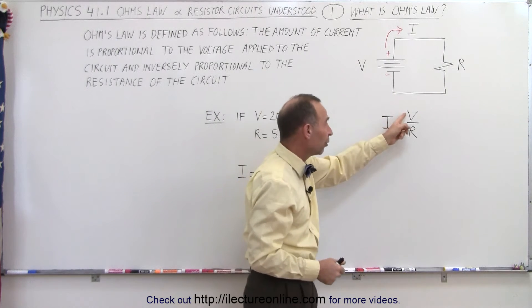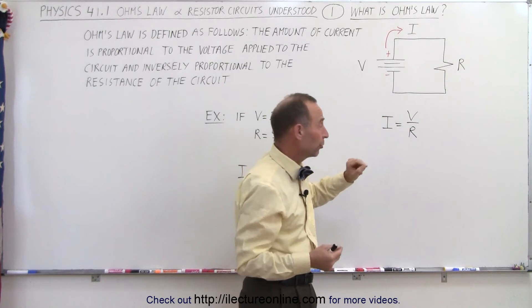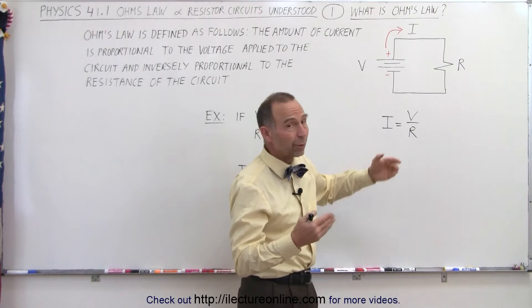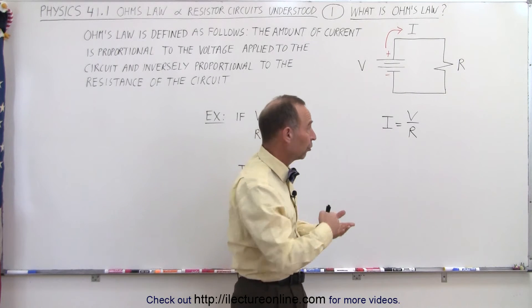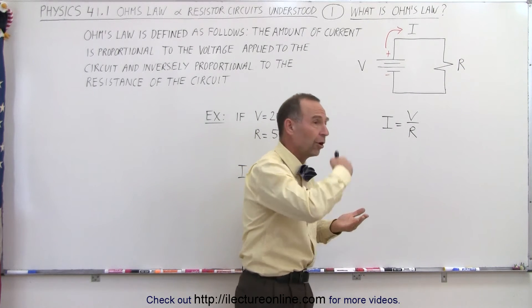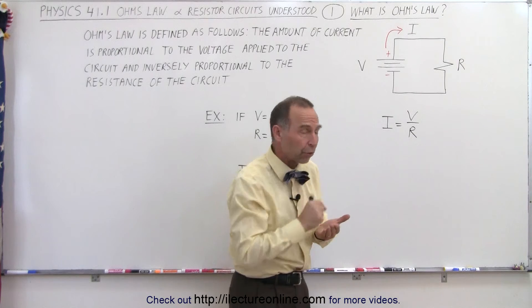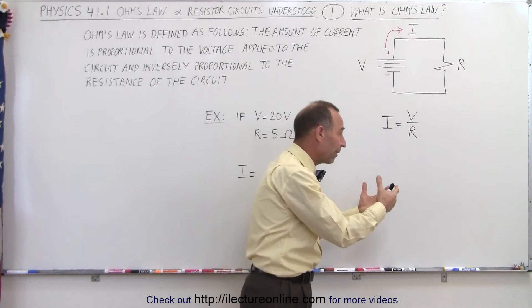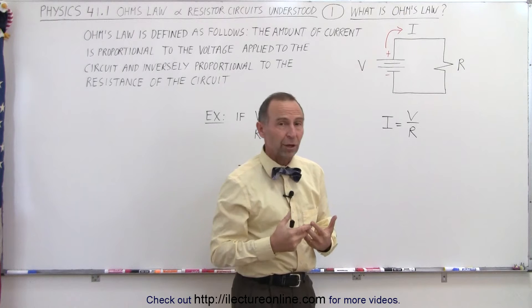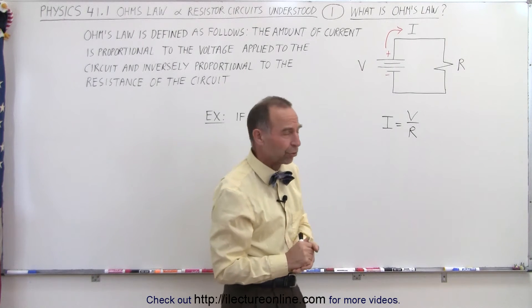Which means that if we double the voltage, we get twice as much current. If we double the resistance, we only get half as much current. So the more voltage we apply to the circuit, the greater the current and it's proportional to that. The more resistance we have in the circuit, the less current that will flow and it's inversely proportional to that.